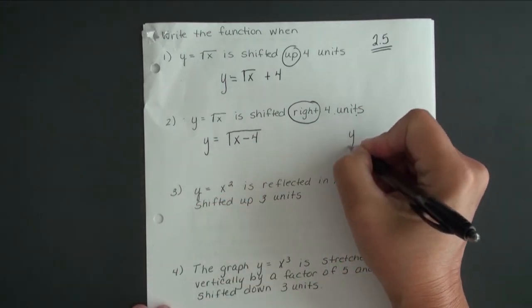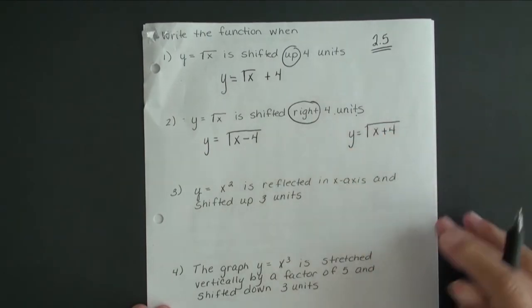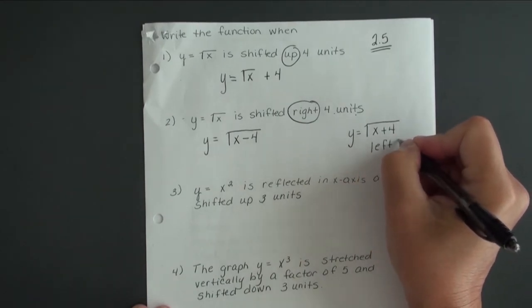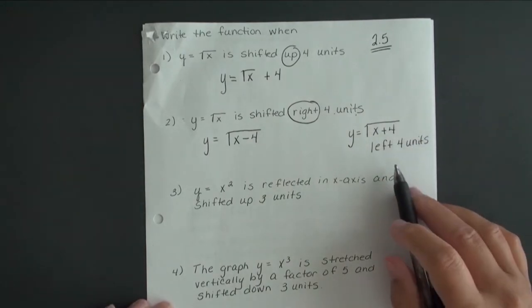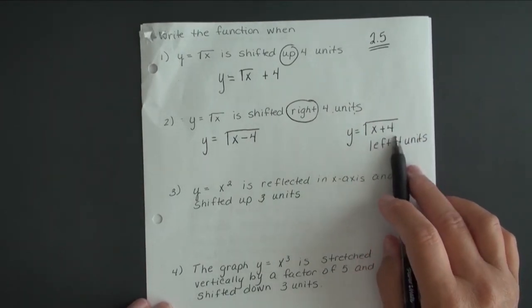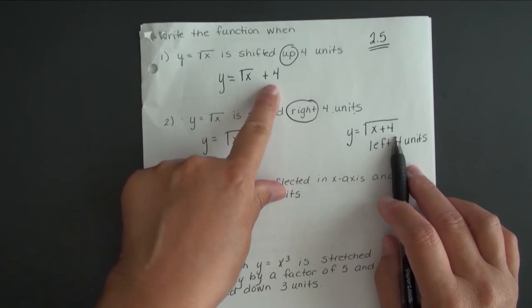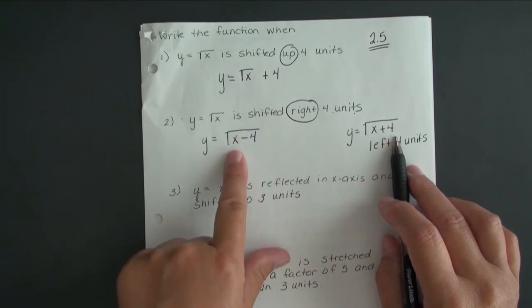If we were to write y equals square root of x plus 4, that means we would be shifting the graph left 4 units. Now compare this function to this one, and you can see the difference. Up and down, the number is just added to the entire function. Right or left, the number is added or subtracted with the x—it needs to be grouped with the x.